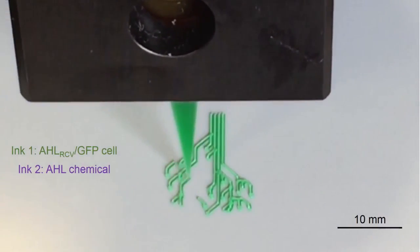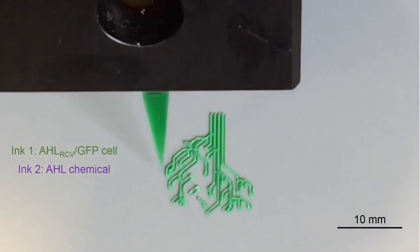The living tattoo is a thin, transparent patch patterned with live bacteria cells in the shape of a tree.